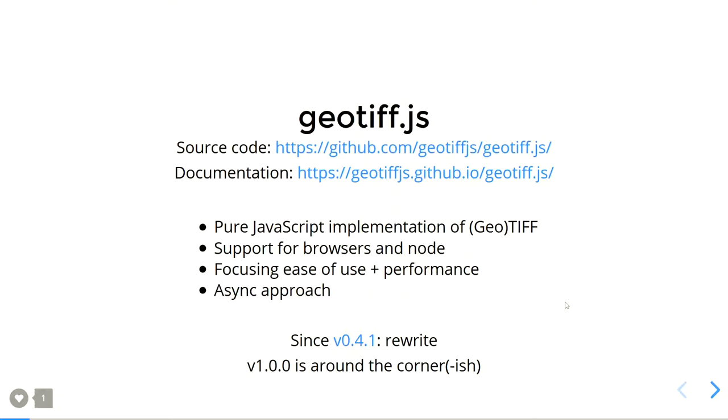Since the last version, which was 0.4, there has been basically a complete rewrite. As Daniel showed in the last talk, downloading the whole file into an array buffer and then using it is not feasible, because we have huge raster datasets now and we want to view them in a performant manner — or view them at all.